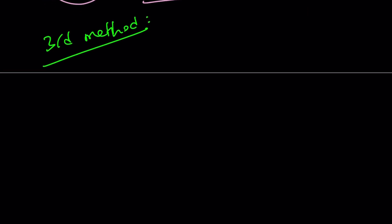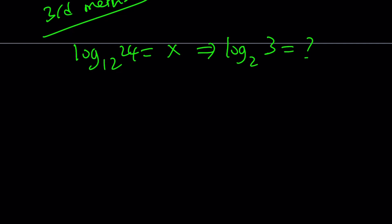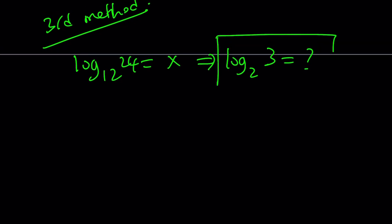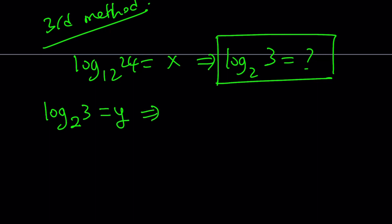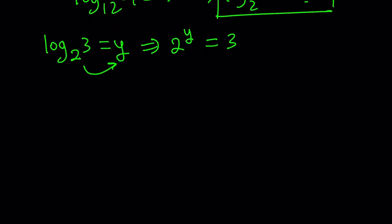With the third method, remember we're given log 24 with base 12 equals x, and we're trying to find log 3 with base 2 in terms of x. I want to set log 3 with base 2 equal to y. From here, we can use the definition of logarithms, which allows us to write it as 2 to the power y equals 3. That's something we can use in our original expression. I'd like to use change of base one more time, so let's write log 24 over log 12 and factor 24 and 12.